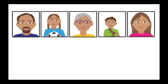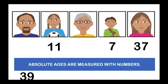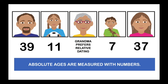But absolute dating is a little different. Let's go back to our family again. Absolute ages are measured with numbers. So if we want to measure the absolute age of each family member, we could look at their birth certificates. We'd find that mom is 37, the daughter is 11, the little boy is seven, and dad is 39. And grandma — well, she's not going to tell you how old she actually is. She prefers relative dating because, like a lot of grandmas, she doesn't really want to say her age in numbers.